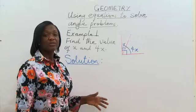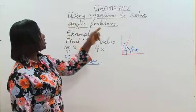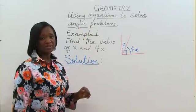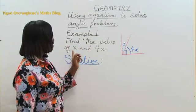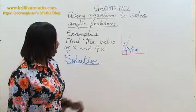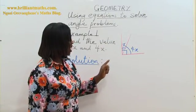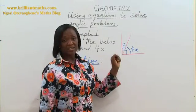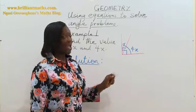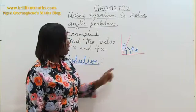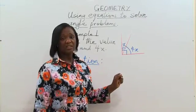Well done. Today, like I said earlier, we are going to learn how to use equations to solve angle problems. For example one, find the value of x and 4x. We have a diagram. From the diagram, we can see that angle x and 4x are adjacent angles. And also, they are complementary. That means they add up to 90 degrees.